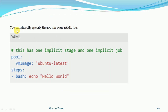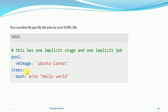You can directly specify the job in your YAML file. When we create the YAML file we have the pool and steps. We can directly define the steps, but this has one implicit stage and one implicit job. If we are not going to define the stage explicitly, then implicitly the system will consider one stage and one job.